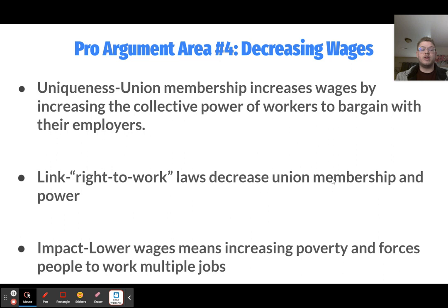The fourth pro argument area is about decreasing wages. Union membership increases wages by boosting workers' collective bargaining power. If one employee asks for a raise, the boss can easily say no because that person is replaceable. But if the entire union threatens to strike if they don't get more money, that's far more persuasive. Right-to-work laws unfortunately decrease union membership and power, which lowers wages. Lowering wages means increasing poverty and forcing people to work multiple jobs, which is bad for their health and overall well-being.